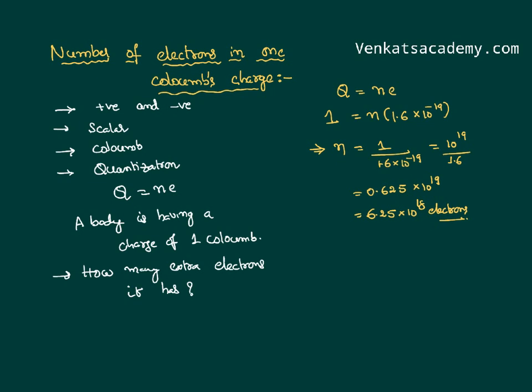Just for one coulomb charge, it needs to have extra electrons of 6.25 into 10 power 18. So whenever we say charge, we mean to say excess charge.